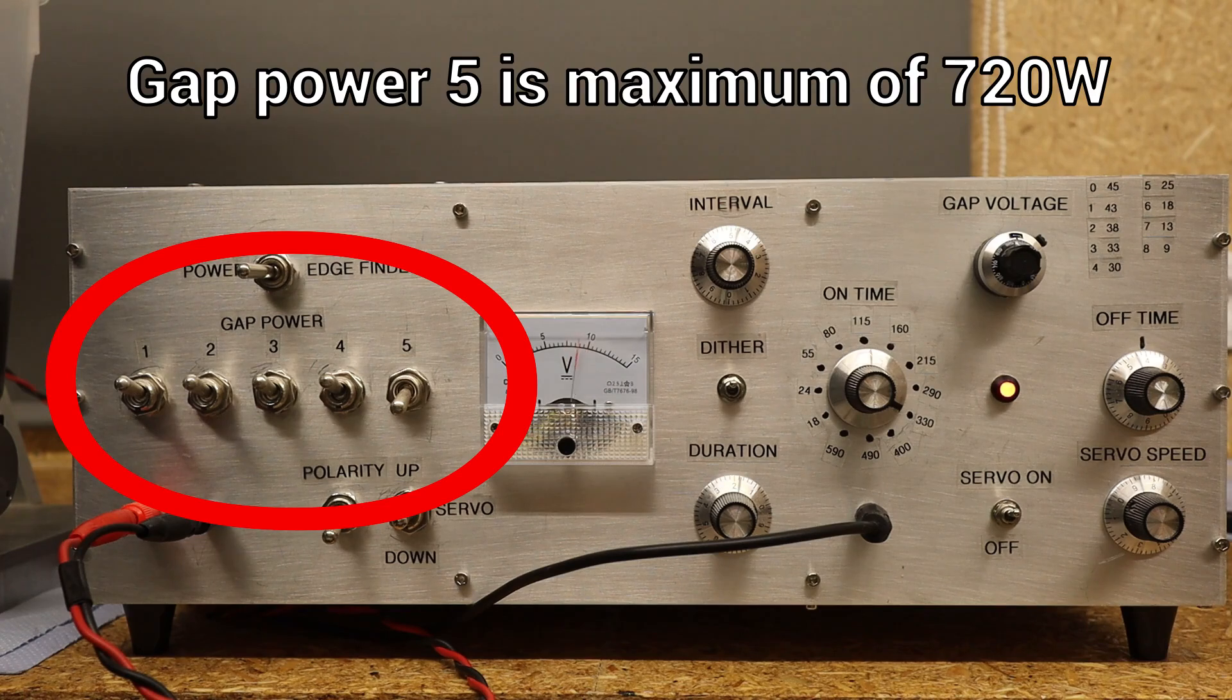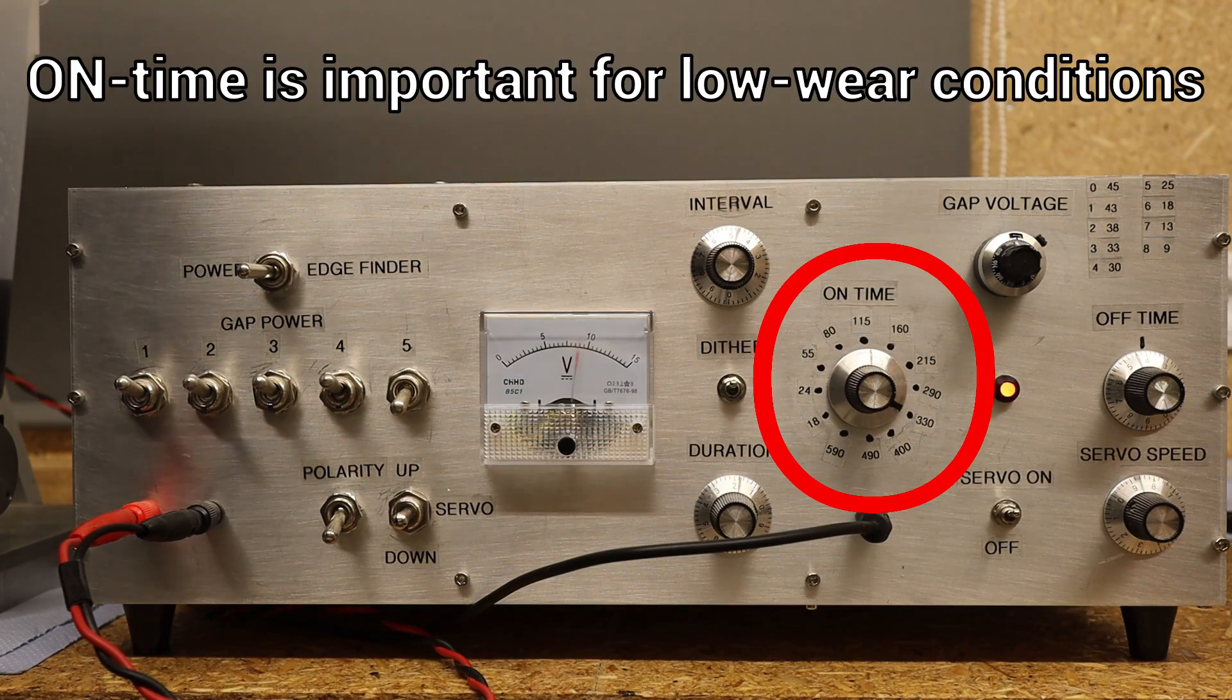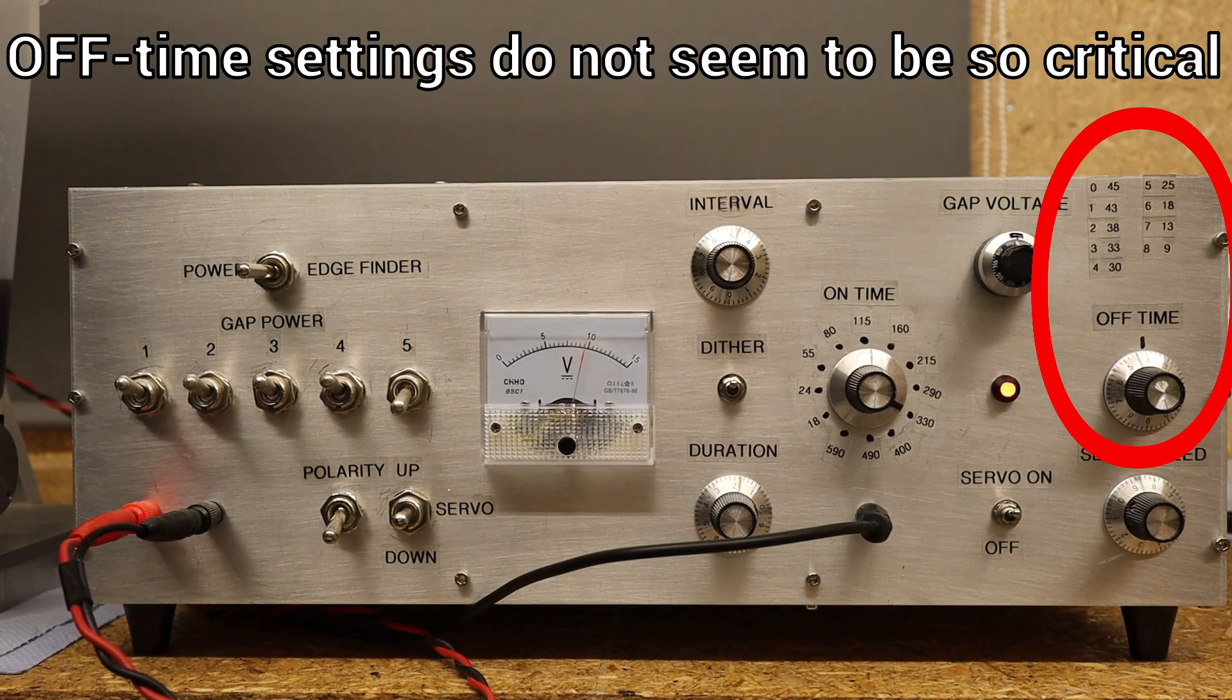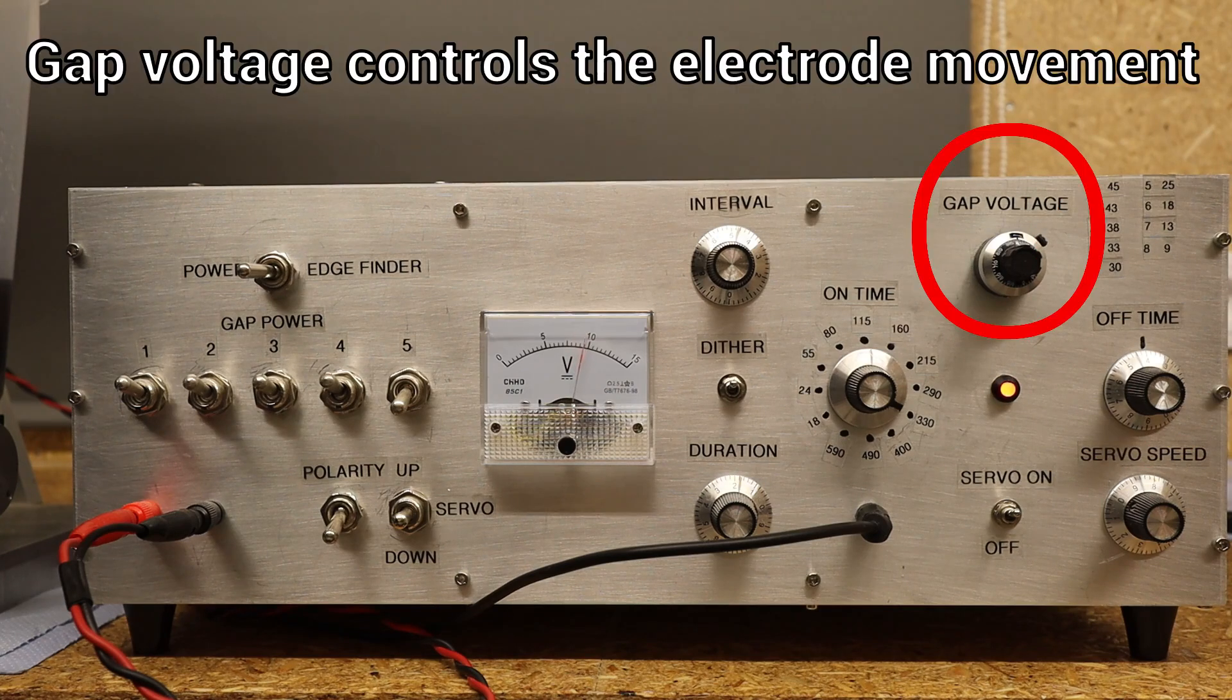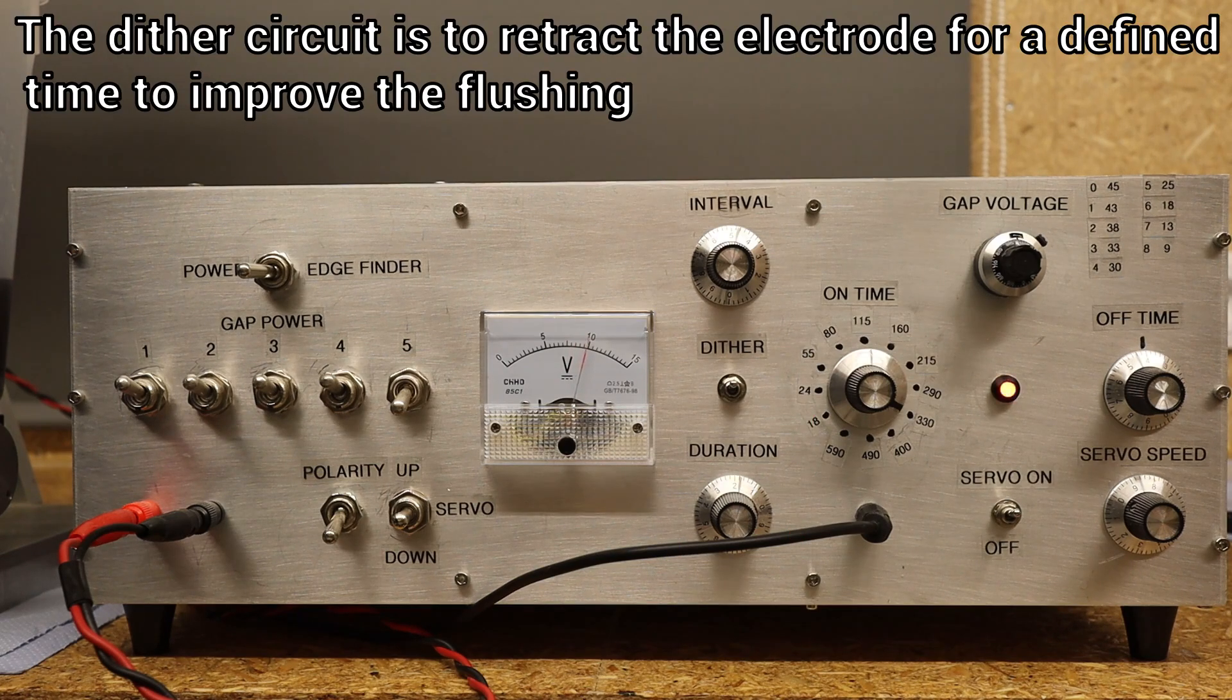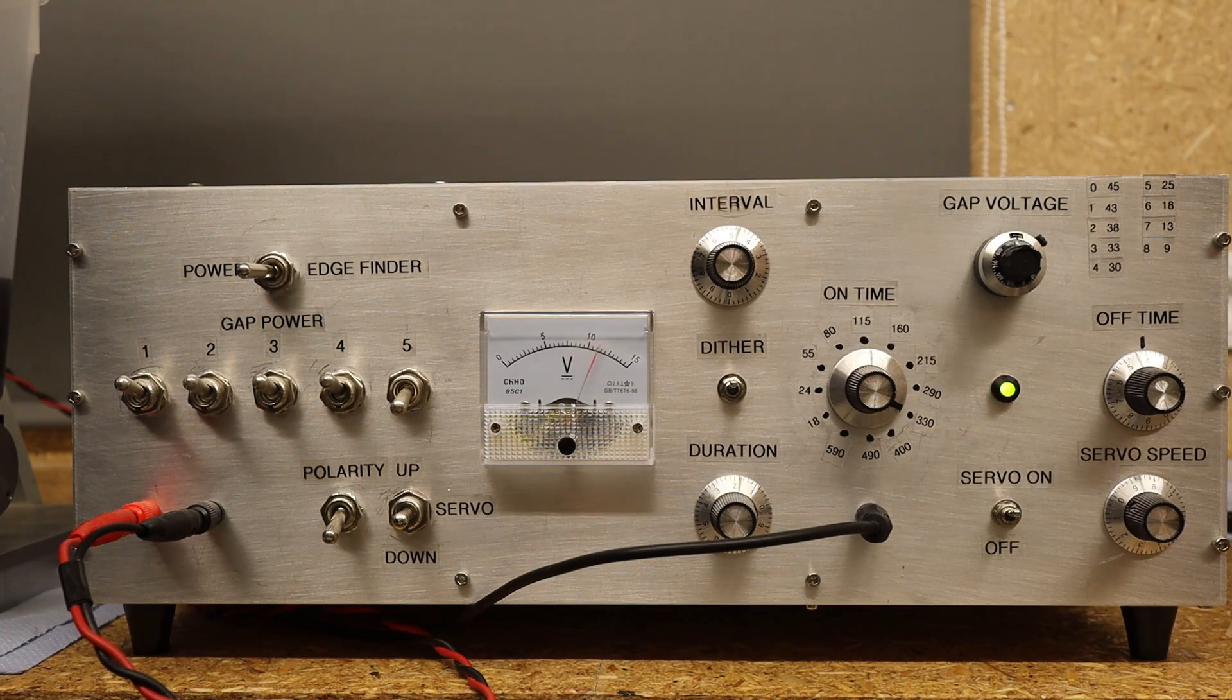My settings for this are: gap power, on time 330 microseconds, off time 30 microseconds, gap voltage 3.6, medium dither, and the electrode is positively polarized.